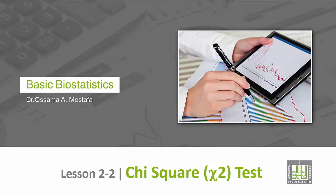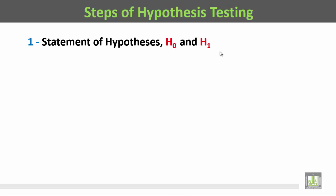Steps of hypothesis testing. خطوات اختبار الفرضية. The first step is the statement of the hypotheses, both H₀ and H₁. The second step is to set the level of significance.